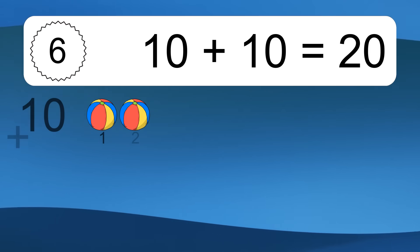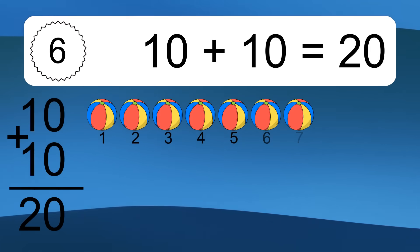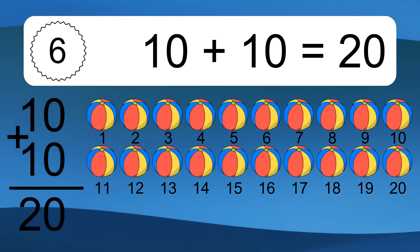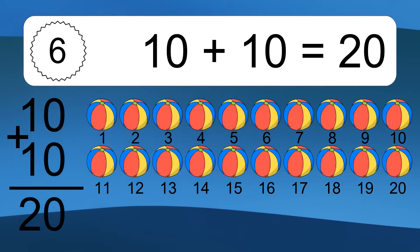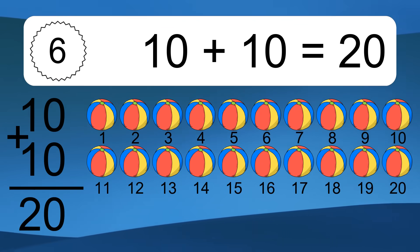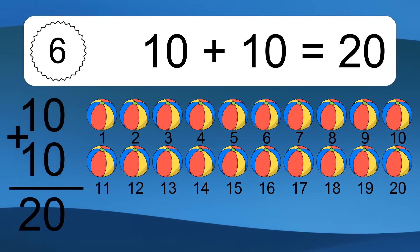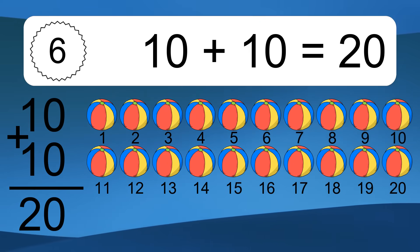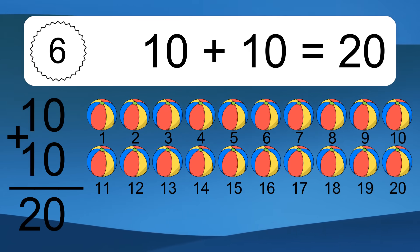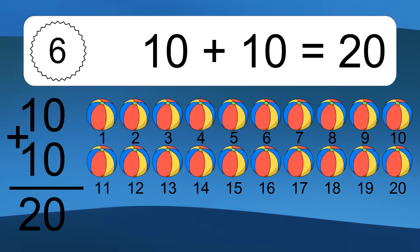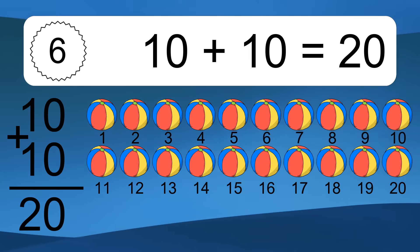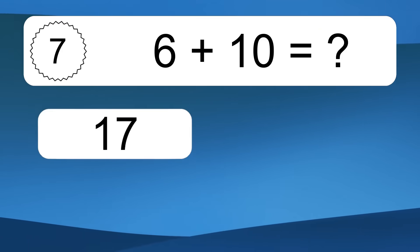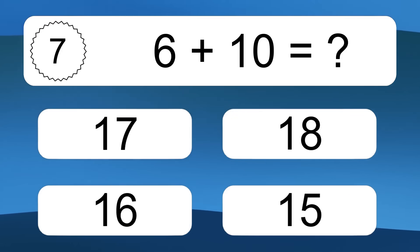10 plus 10 equals what? 10 plus 10 equals 20. Let's count it: 1, 2, 3, 4, 5, 6, 7, 8, 9, 10, 11, 12, 13, 14, 15, 16, 17, 18, 19, 20.